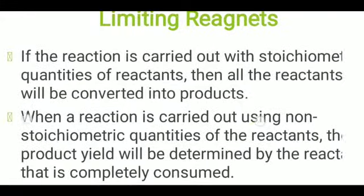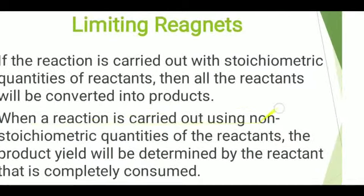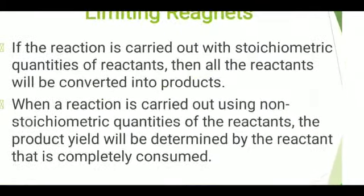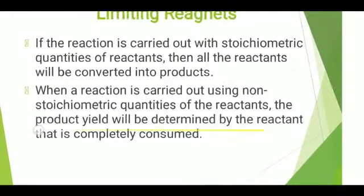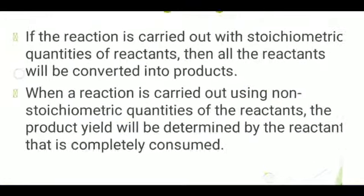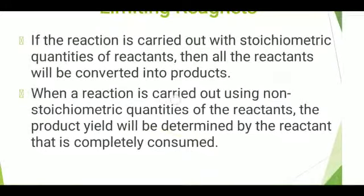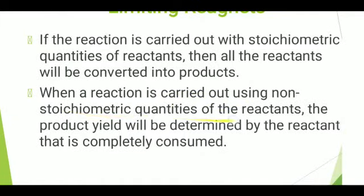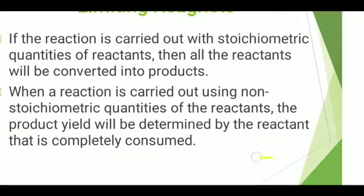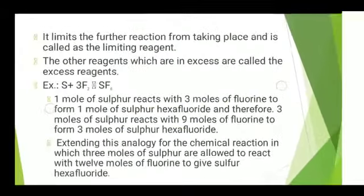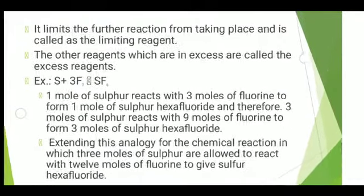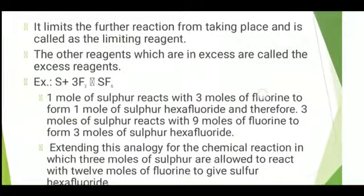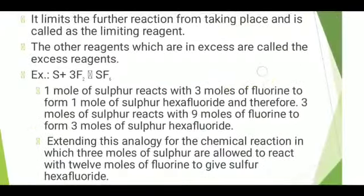If it is stoichiometric, whatever reactants are involved in the reaction, all are converted to the product 100%. When a reaction is carried out using non-stoichiometric quantities of the reactants, the product yield will be determined by the reactant that is completely consumed. That reactant limits further reaction from taking place, and it is called the limiting reagent. The other reagents, which are in excess, are called the excess reagent.